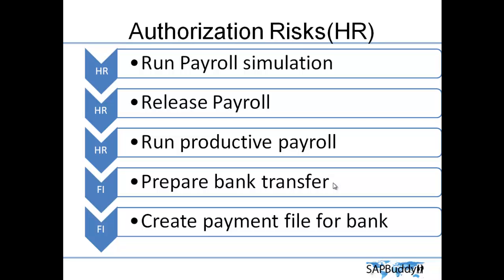Next is an example of authorization on HR. Let's say one person has all this authorization. Normally the HR payroll process works as follows: first they run a simulation for payroll, and the payroll is released. Then they run the actual payroll run. Once the payroll is run, it will prepare a bank transfer, which is done by FI as it is accounts payable. After the bank transfer is prepared, a payment file is created which needs to be sent to the bank — in many cases this is also automated and sent to the respective bank automatically.